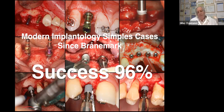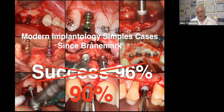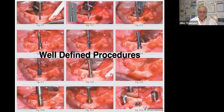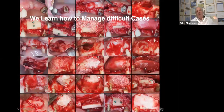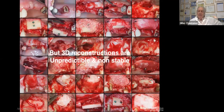Since the Brånemark era, modern implantology has shown good results treating simple cases — globally around 96% good results, even though it drops to about 90% lately due to long overall treatment times. Since very early implantology, we have well-defined procedures for how to place an implant. We have also learned how to manage difficult cases, but these 3D reconstructions are unpredictable and non-stable.